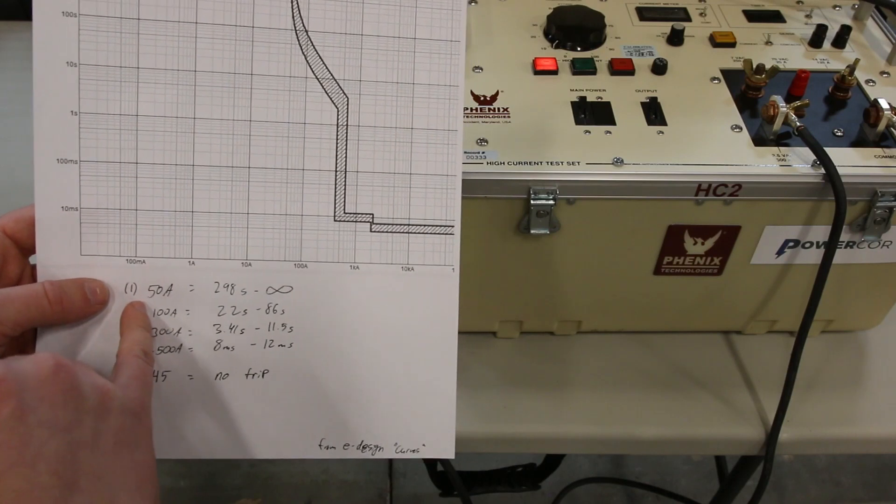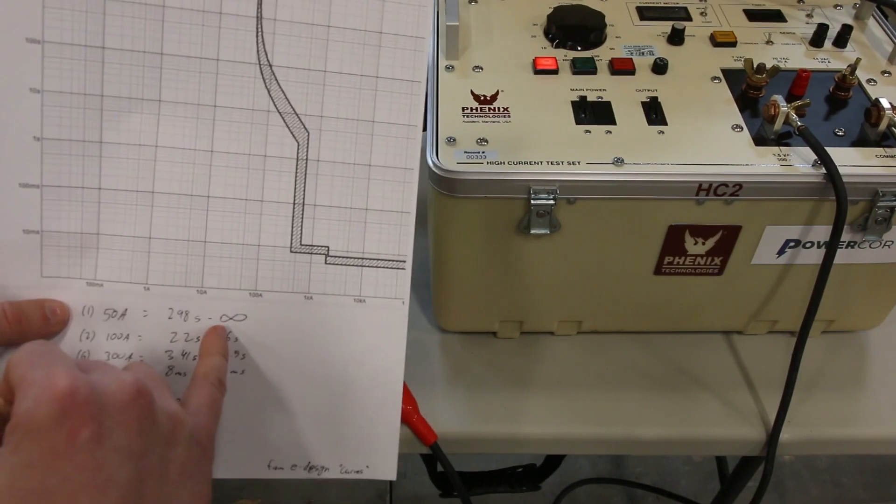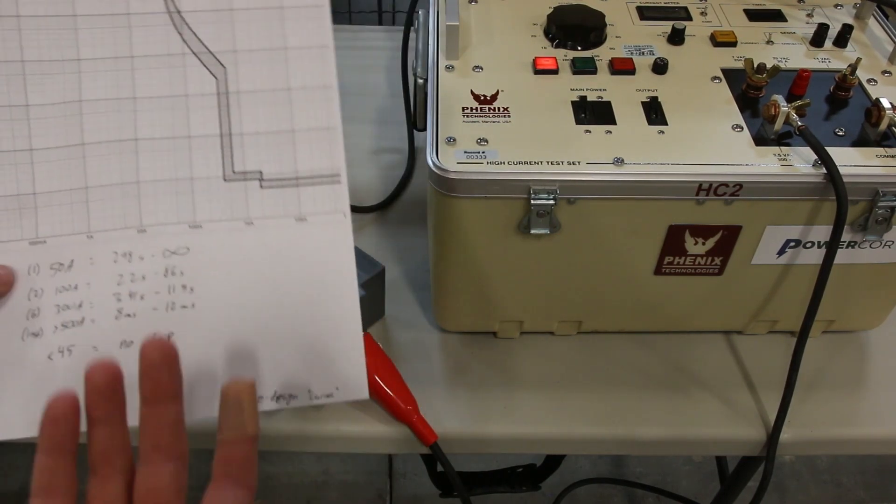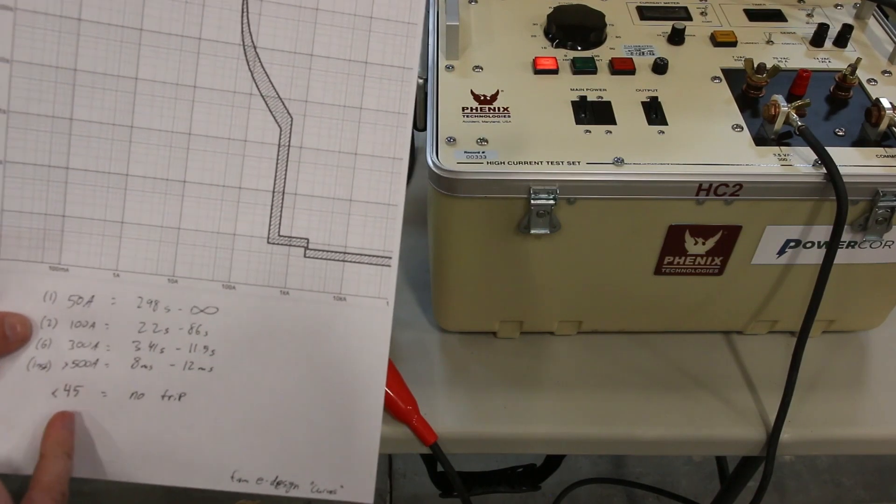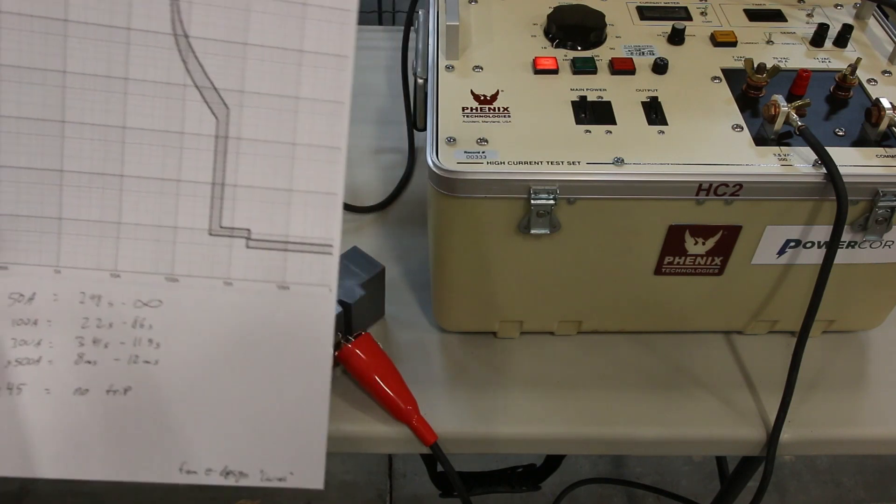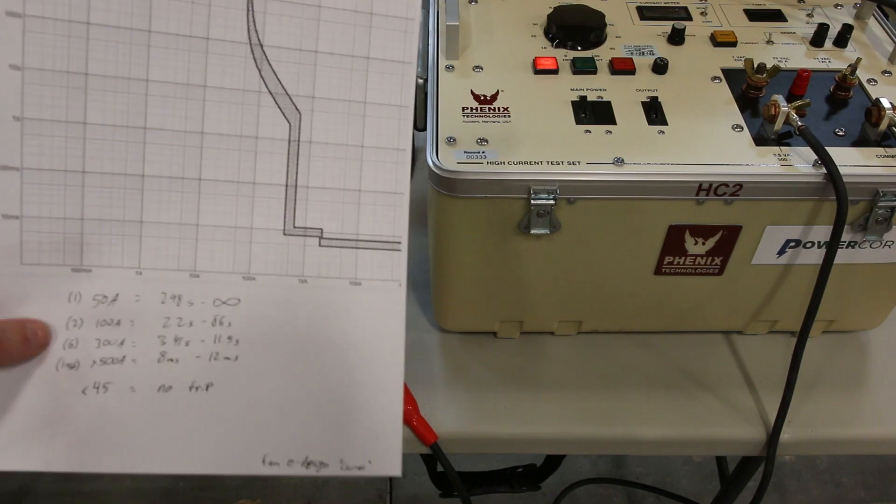If I had exactly 50 amps in there, according to the curve, it should trip between 300 seconds and infinity. So roughly no trip at 100% load. I like that. Below 45 amps, which is 90%, below 90% it should never trip, ever, period. So if we're tripping at 30 amps, we've got an issue.